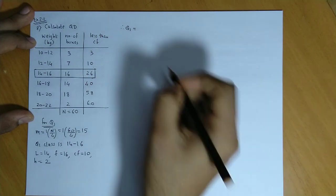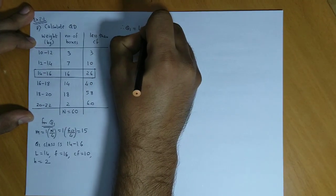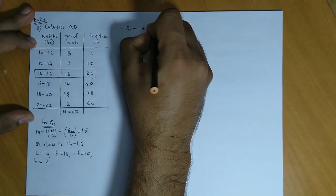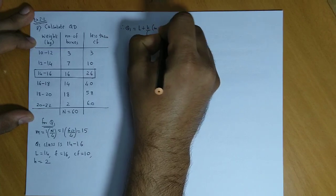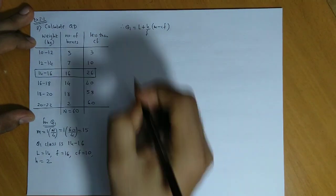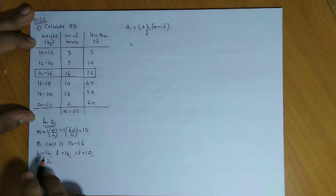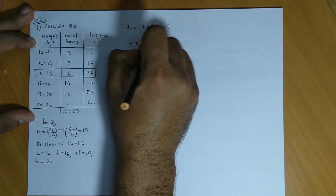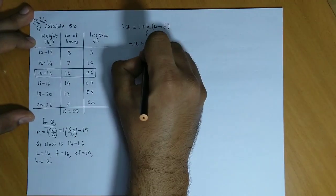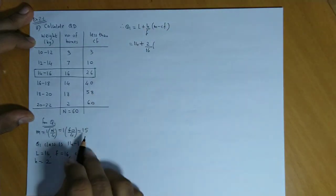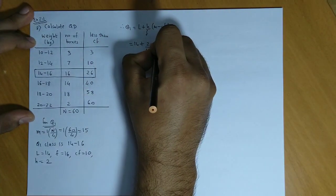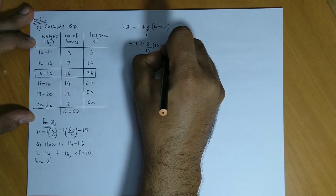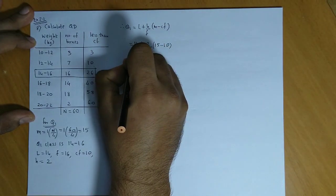We get Q1 as: Q1 equals L plus H upon F into M minus CF. Lower limit is 14, so 14 plus height 2, frequency 16, M is 15, and CF value is 10.